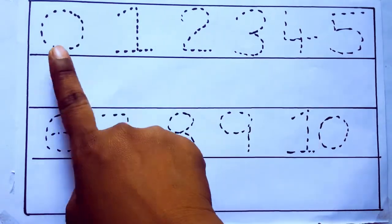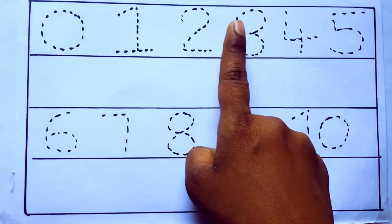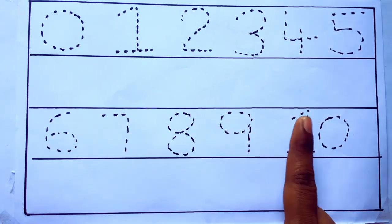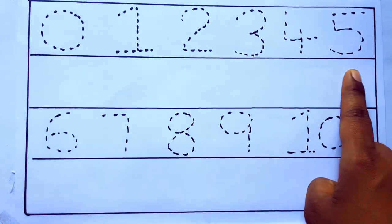0 to 10: 0, 1, 2, 3, 4, 5, 6, 7, 8, 9, 10 and rewriting the numbers.